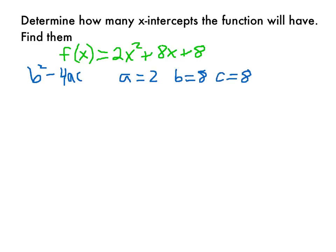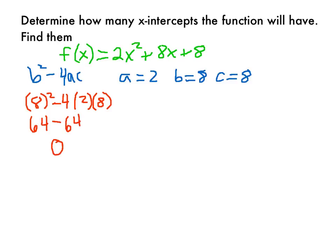So when I plug those into my discriminant, I get 8 squared minus 4 times 2 times 8, which is 64 minus 64, and I get 0. Since the discriminant is equal to 0, that tells me I'm going to have one x-intercept. If the discriminant were positive, we would have two x-intercepts, and if it were negative, we would have no x-intercepts.